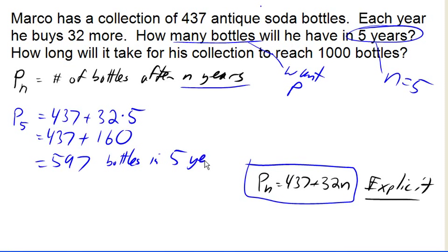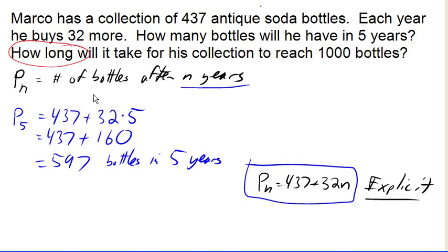Now to answer our second question, which was, how long will it take for his collection to reach 1,000? Notice we're looking for how long. So in this case, we want n, the number of years, for his collection to reach 1,000, which means when p is 1,000.